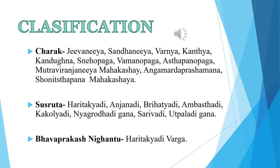Classification of Yashti Madhu in different Samhitas. In Charaka, it is included in Jeevaniya Mahakashaya, Sandhaniya Mahakashaya, Varniya Mahakashaya, Kanthiya Mahakashaya, Kandugna Mahakashaya, Snehopaga Mahakashaya, Vamnopaga Mahakashaya, Asthapanopaga Mahakashaya, Mutra Viranjaniya Mahakashaya, Angamardha Prashaman Mahakashaya, and Shonitsthapan Mahakashaya. Jeevaniya means life promoter — the group is named after life-promoting drugs. Sandhaniya means these plants are helpful in joining of fractures. Varniya means these plants are helpful in enhancing the complexion.